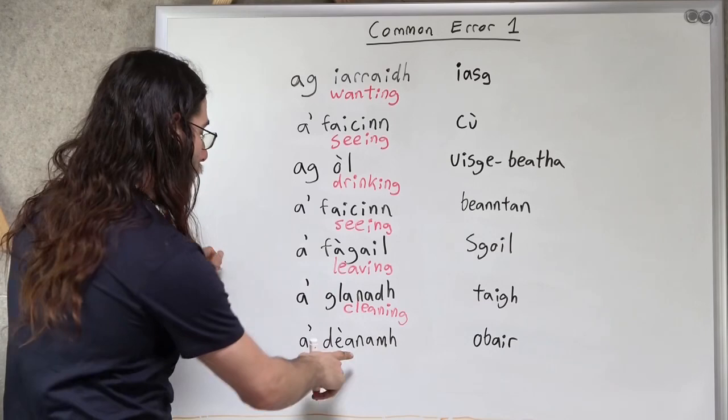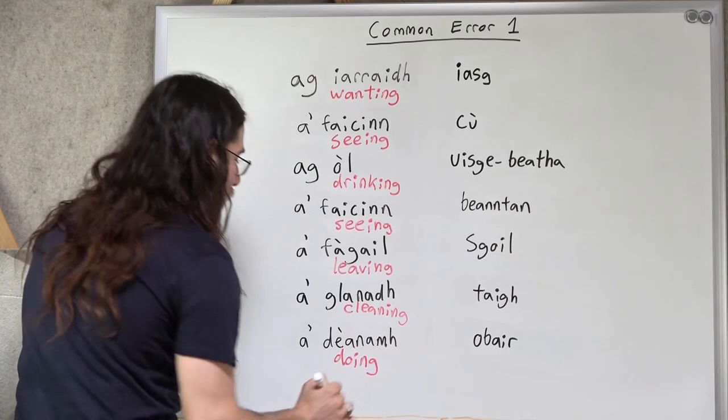A' dèanamh, or a' dèanadh, depending on which dialect of Gaelic you're using, that's doing or making. For now, let's focus on it being doing here.